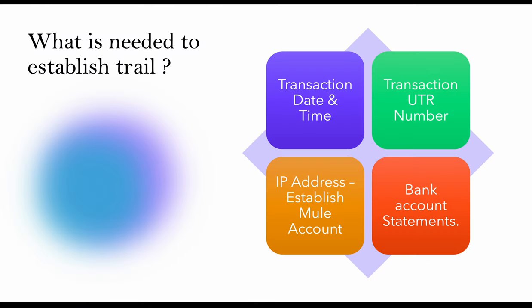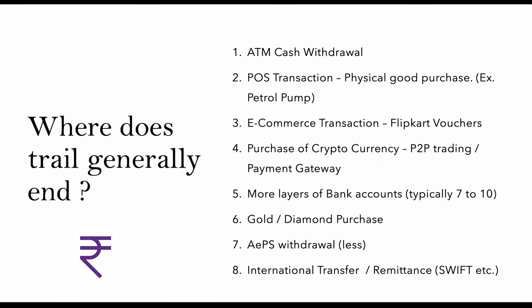What is needed in the charge sheet to establish a trail: transaction date and time, UTR number, bank account statement, and IP address. Without these, it is not an appropriate way to go forward. A charge sheet with these elements is essential for any type of financial fraud investigation.